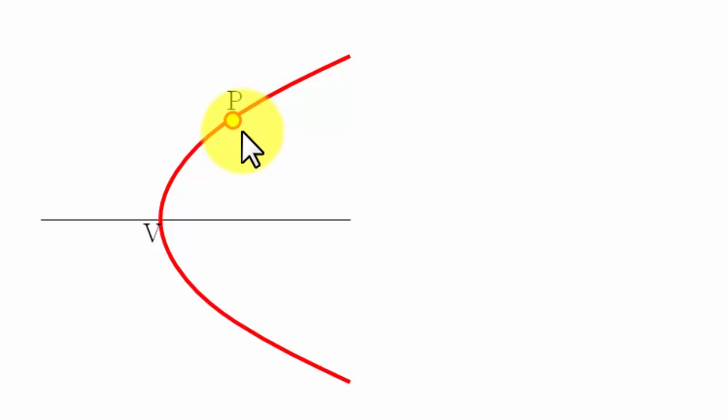What we need to do is drop a perpendicular from point P which is going to cut this axis somewhere here. Let's say that the name of this point is A. Next step, I'm going to keep one leg of my compass over here, other leg over here.